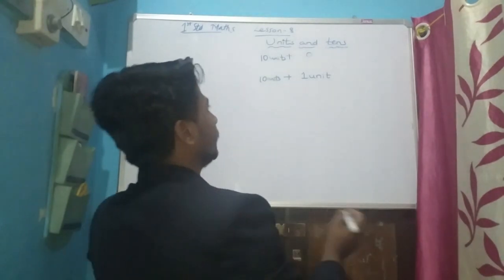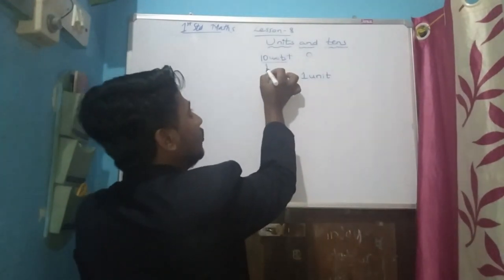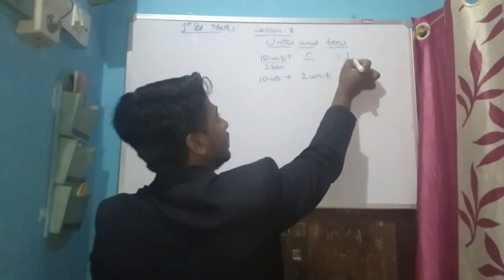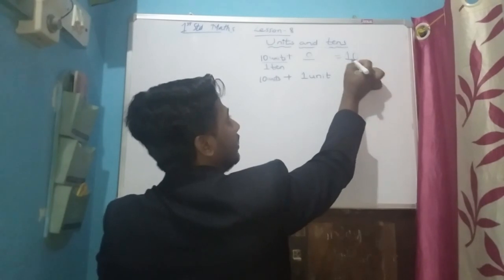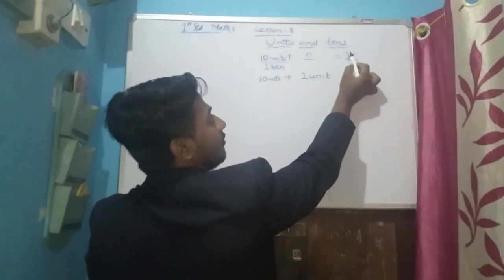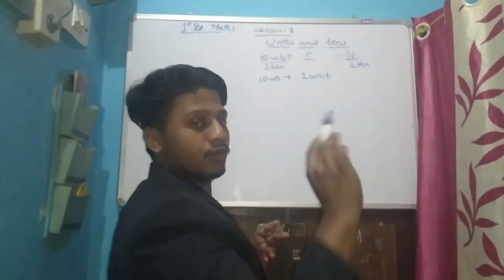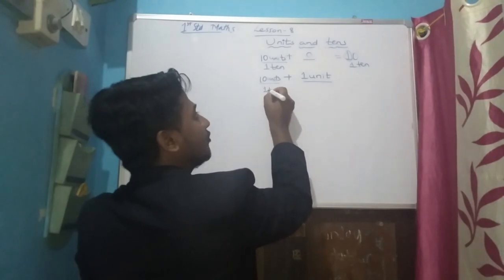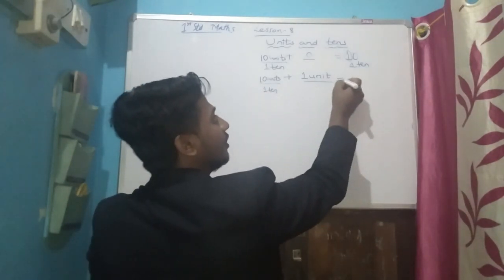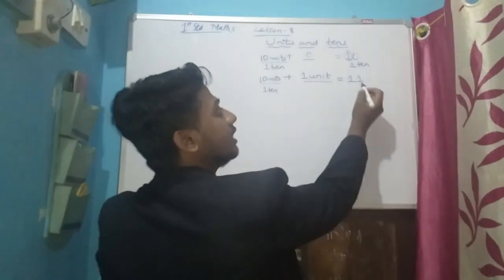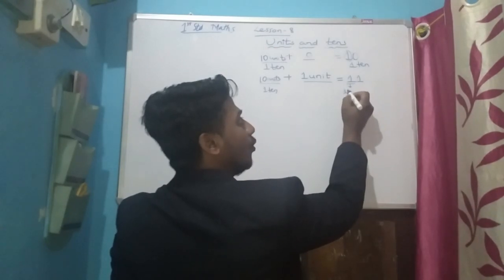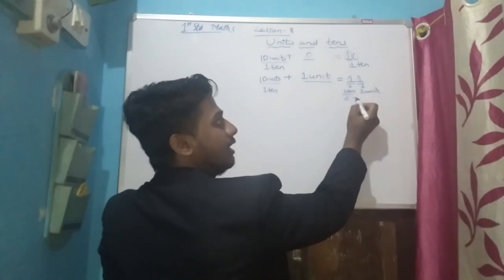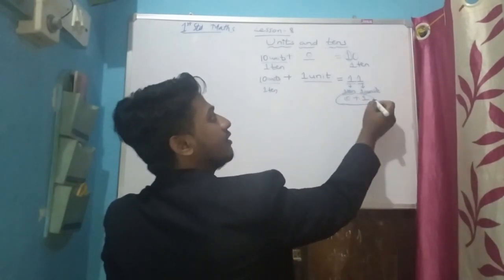Ten units is one ten plus zero units, which equals ten. In the number ten, the one refers to one ten and zero means no unit. Ten units plus one unit means one ten plus one unit equals eleven. In eleven, this one refers to one ten and this one refers to one unit. Ten plus one equals eleven.